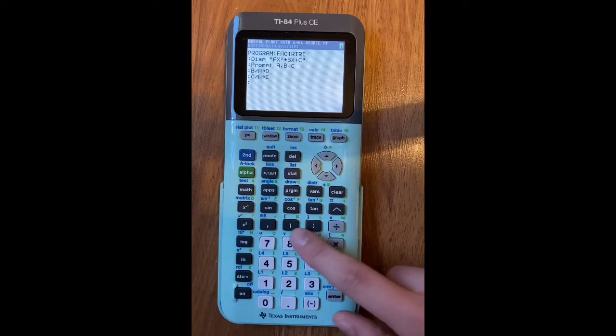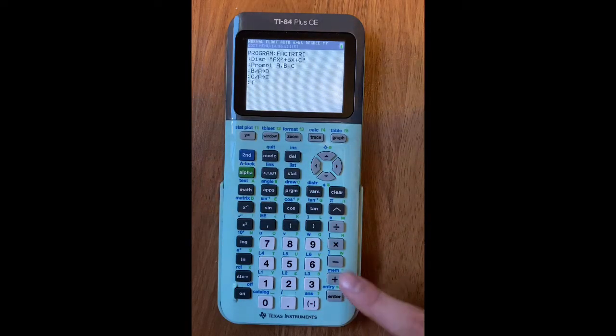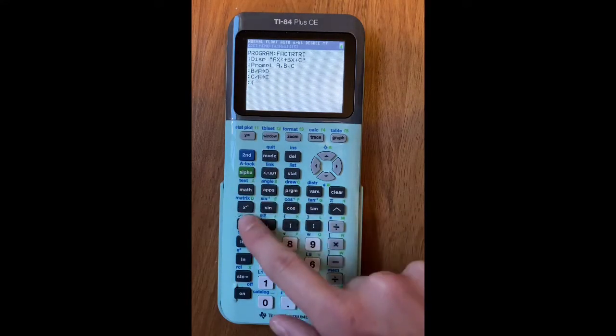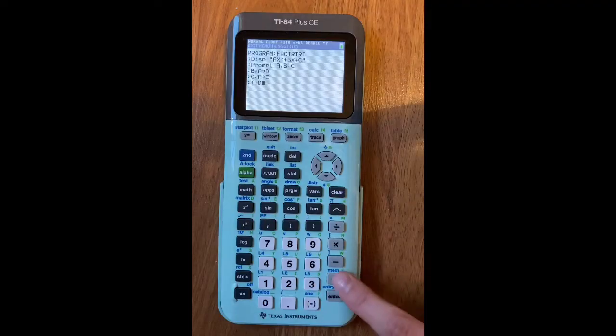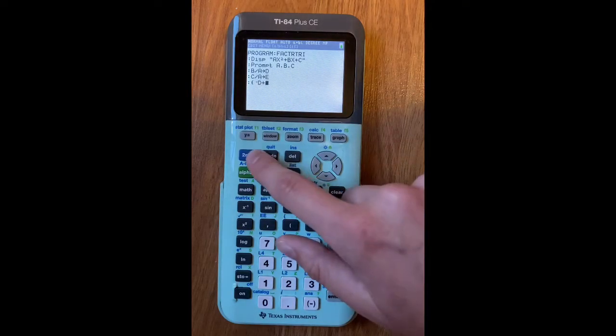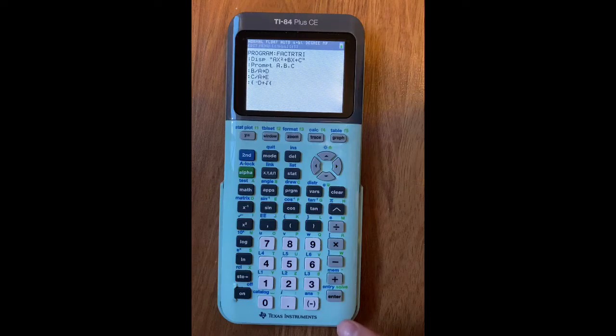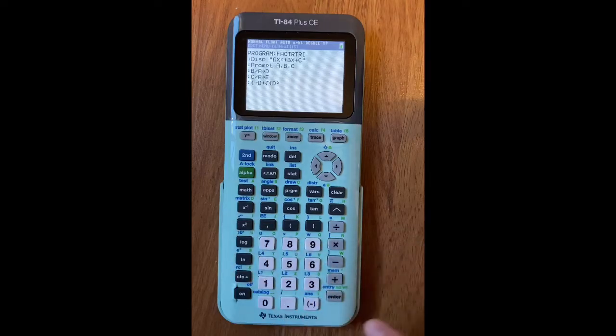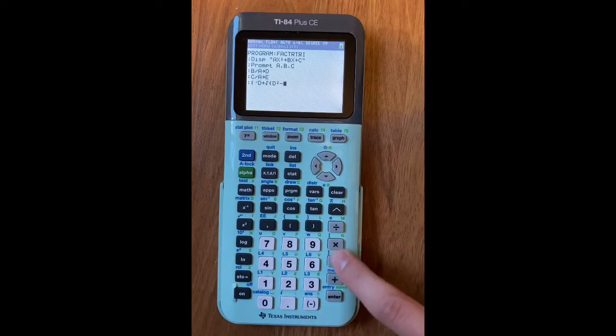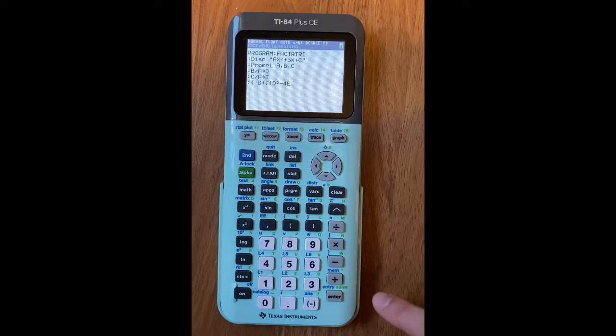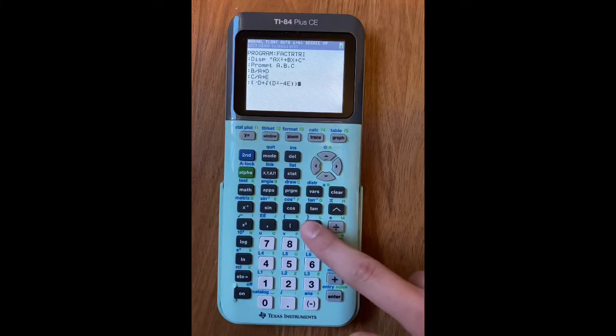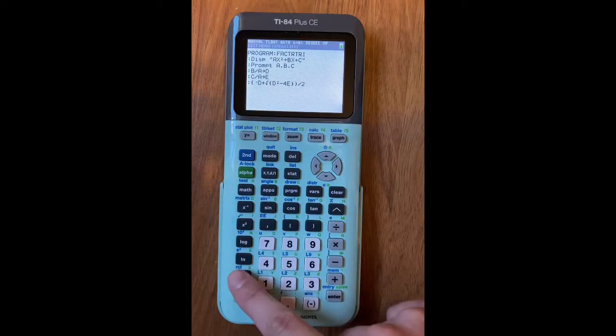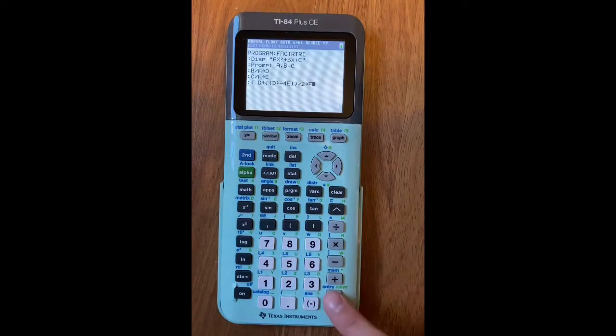Then you will do a parenthesis, negative sign, not a minus sign, a negative sign, D, plus, and you're going to do the square root. D, and then squared, minus 4E, and then 2, close parenthesis. It's important that you have 2, divided by 2, stores as F. Press enter.